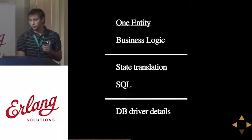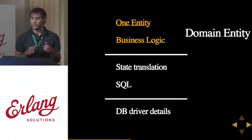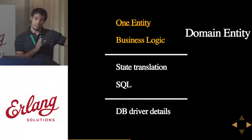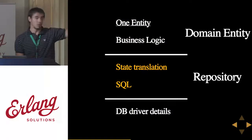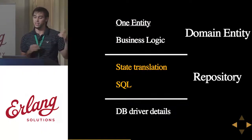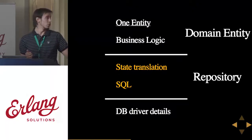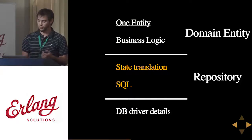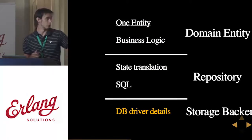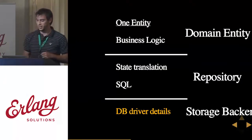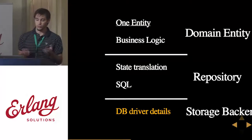Let's take each entity and start splitting its responsibilities into new modules. The first module will be a domain entity, which encapsulates the business logic and the state for the entity. This domain entity knows nothing about the storage details. Then we will have our repository, which is the layer that translates back and forth the representation of the entity into something that the database can use. The repository also stores query logic like selectors and deletors. And finally, there's a layer that actually knows how to talk to a database — those are the storage backends, a convenient layer to encapsulate the different DB drivers so that no one else knows about them.